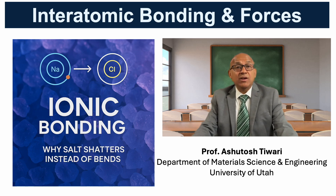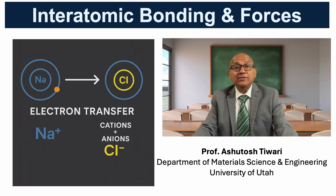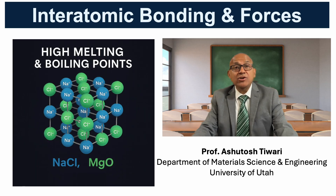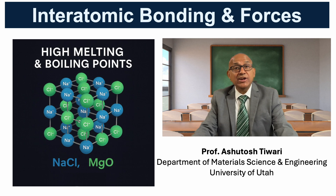Ionic bonding occurs when one atom donates one or more valence electrons and another atom accepts them, creating oppositely charged ions. These ions are held together by strong electrostatic or coulomb attraction. The result is a highly ordered three-dimensional lattice. Because of the strength of these interactions, ionic compounds typically have very high melting and boiling points. Sodium chloride and magnesium oxide are good examples.